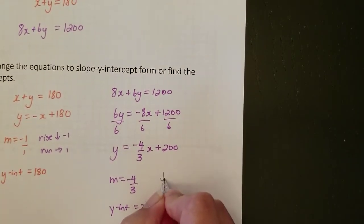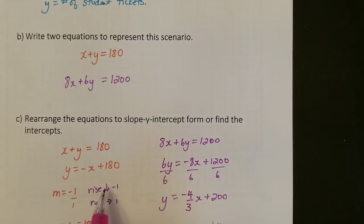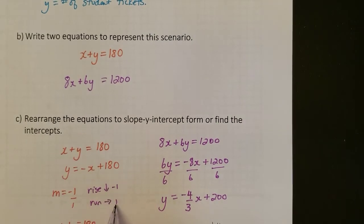So this is going to go down 4 and over 3, and the other equation, the other line is going to go down 1 and over 1.